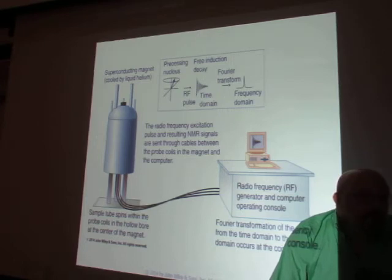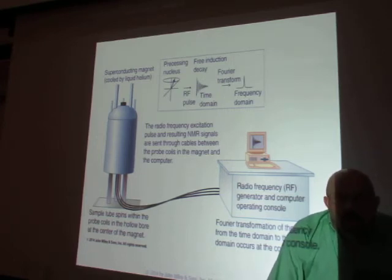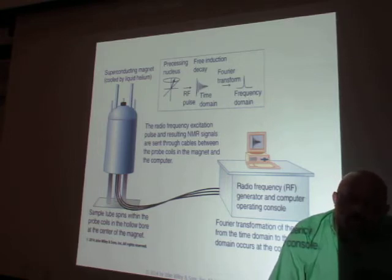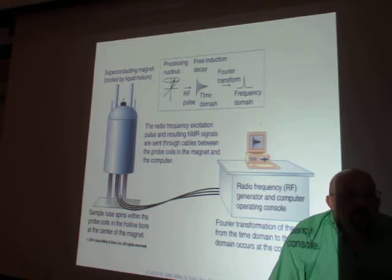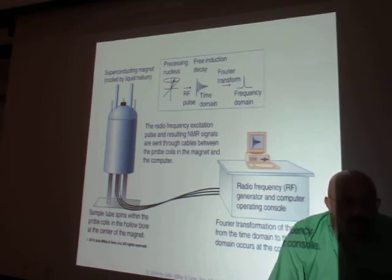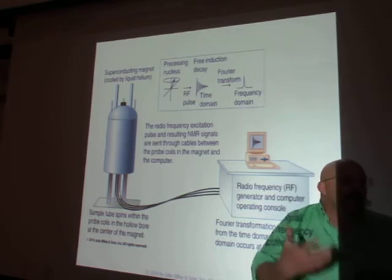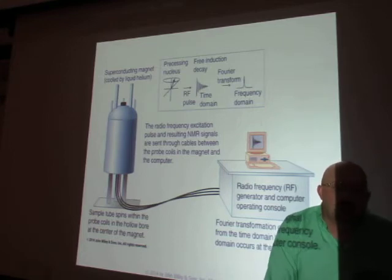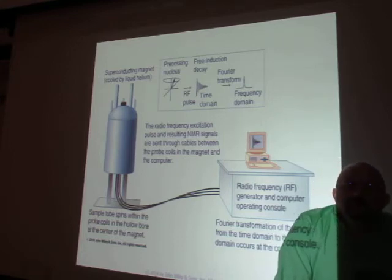Where we get helium is when a new natural gas well is drilled. Helium, being so light, comes off first — you collect all the helium you can, and then that well is done. Then the natural gas starts coming off. So when you first drill a well you get the helium, and then it's done — you don't get any more.